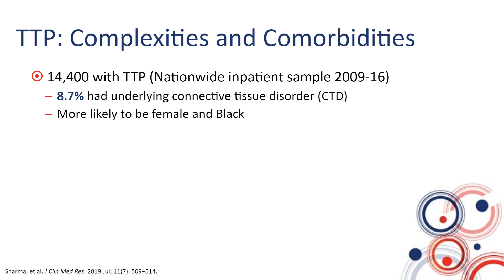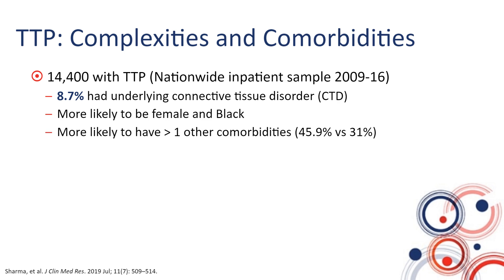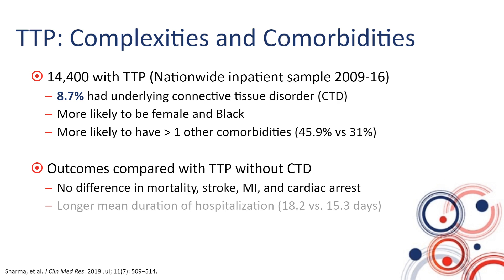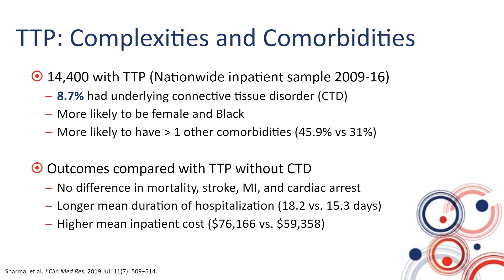As expected, many of these patients were female and Black and were more likely to have other comorbidities — more than one comorbidity was present in over 45% of patients with autoimmune disorders versus only 31% without. While the presence of a connective tissue disorder does not seem to impact acute mortality or rates of stroke, heart attacks, and cardiac arrest, it does translate into a longer hospitalization of approximately 18 versus 15 days, and higher inpatient costs — $76,000 versus $59,000.